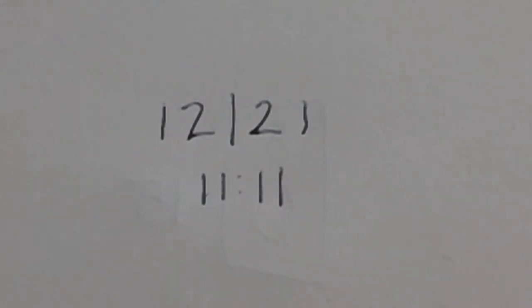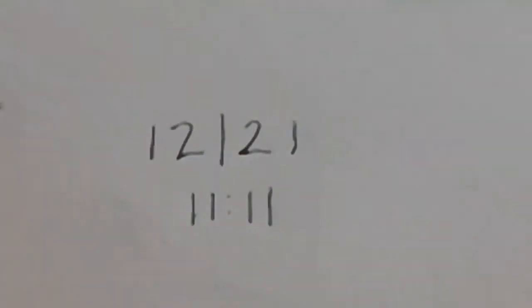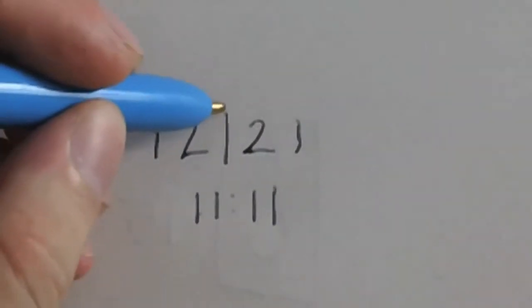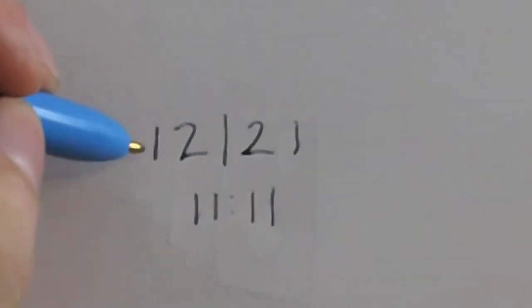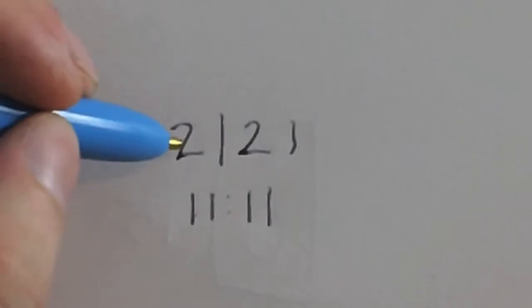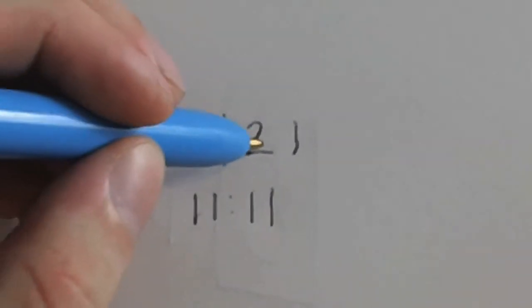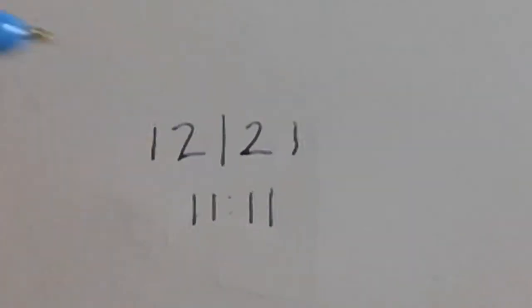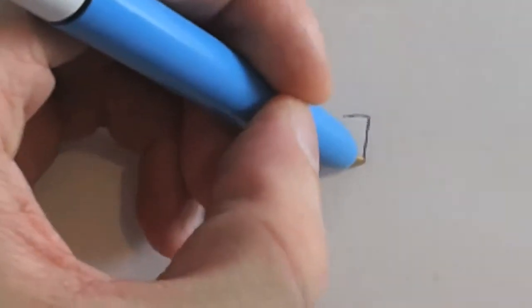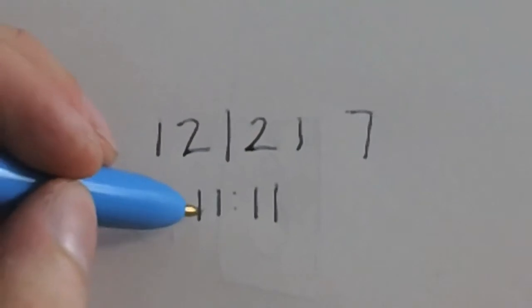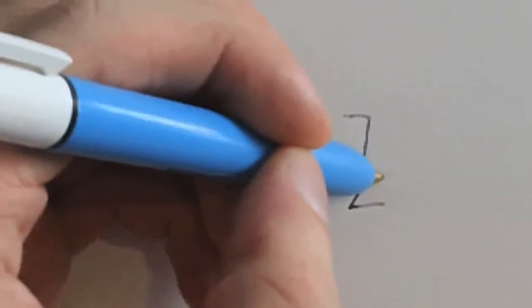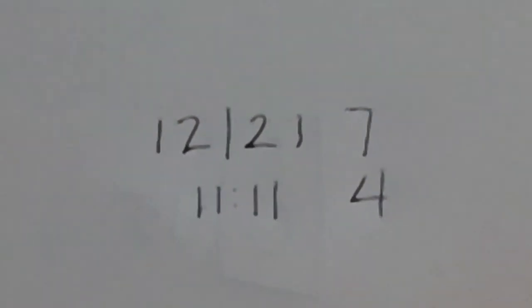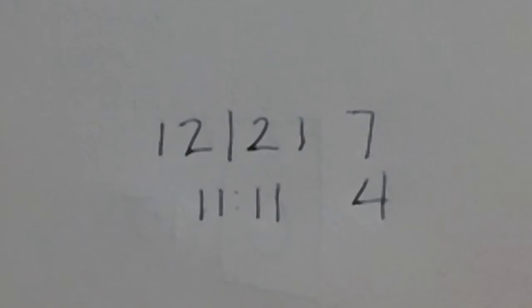Check this out. You can add all of these together because the slash looks an awful lot like a 1. So 1 plus 2 plus 1 plus 2 plus 1 is 7. And 1 plus 1 plus 1 plus 1 is 4.